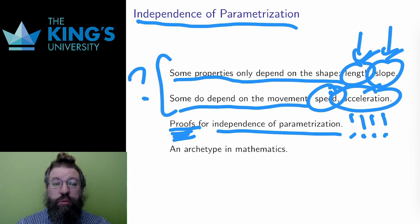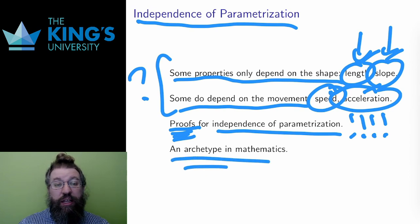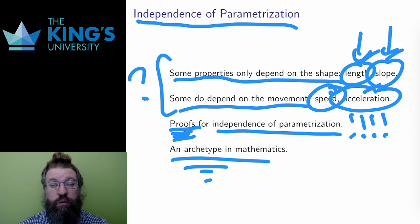This is also an example of a very important pattern or archetype in mathematics. Many objects are described in multiple ways, like the multiple parametrizations for a curve. However, they have intrinsic properties, properties that should be the same for all possible descriptions.